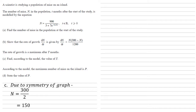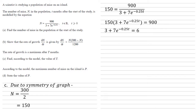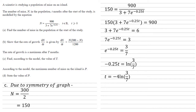Now we want the value of t to go with this. Using our original formula and replacing n with 150, multiplying at the bottom gives 150 times 3 plus 7e to the minus 0.25t equals 900. Dividing both sides by 150, then taking away 3 from both sides, then dividing both sides by 7 gives e to the minus 0.25t equals 3 sevenths. Taking the natural log of both sides gives minus 0.25t equals ln(3/7). Multiplying by minus 4 gives t equals minus 4 times ln(3/7), which works out to t equals 3.39.